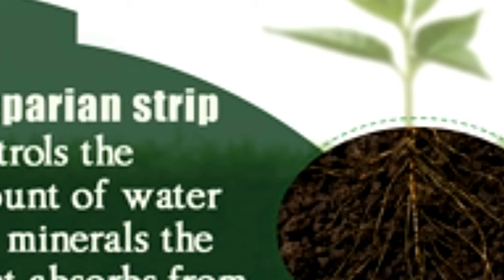Moreover, since the roots are in direct contact with the soil, which may contain harmful substances like chemicals or bacteria, this raises the question: how does the plant control what substances it absorbs from the soil and defend itself from harmful ones? The answer lies in a structure called the Kasparian strip, whose function is explained below.